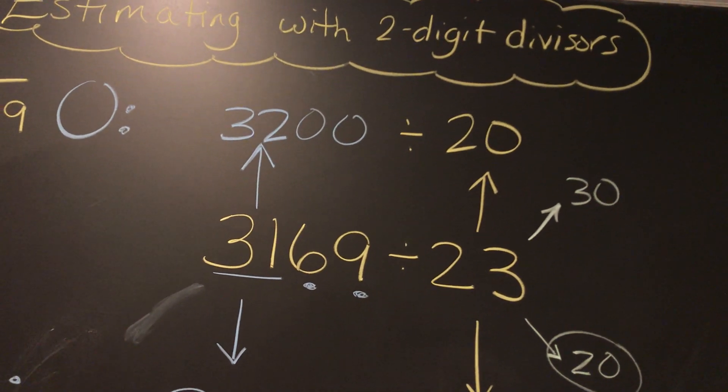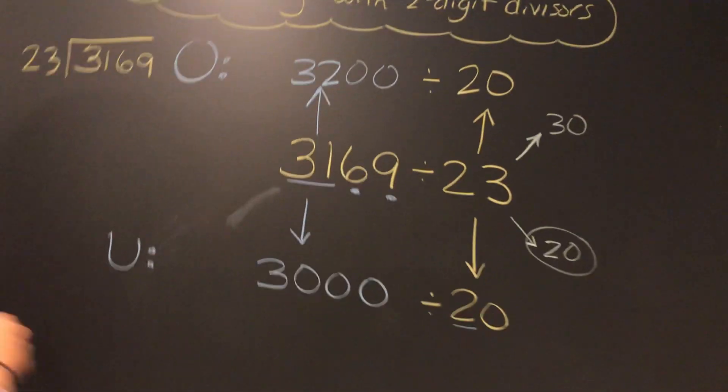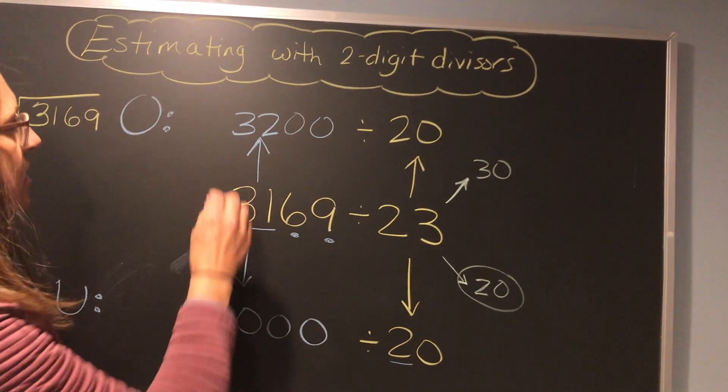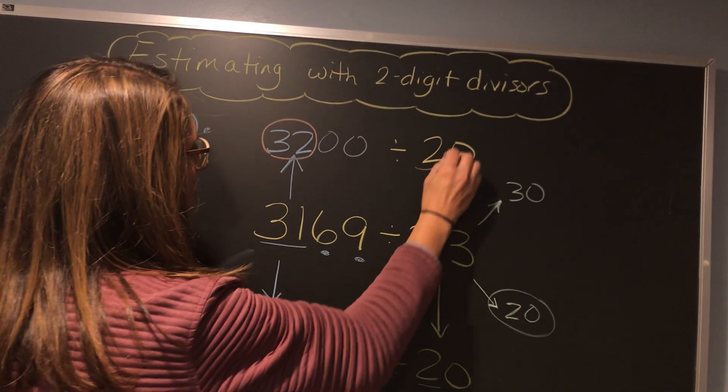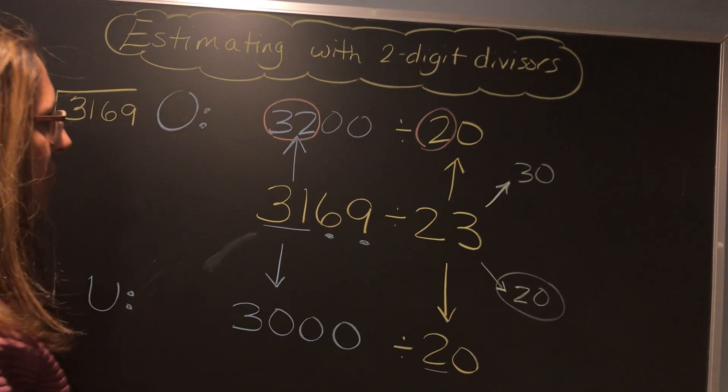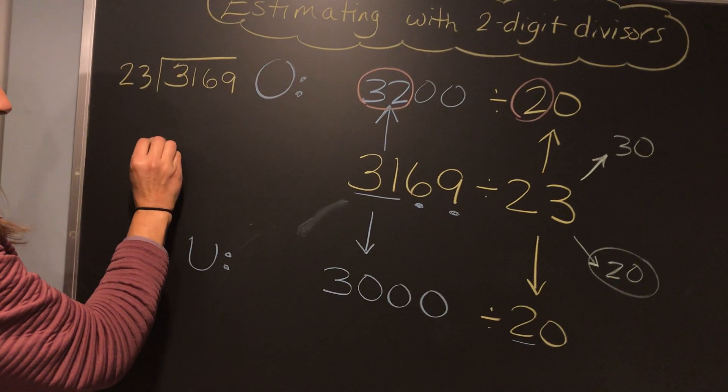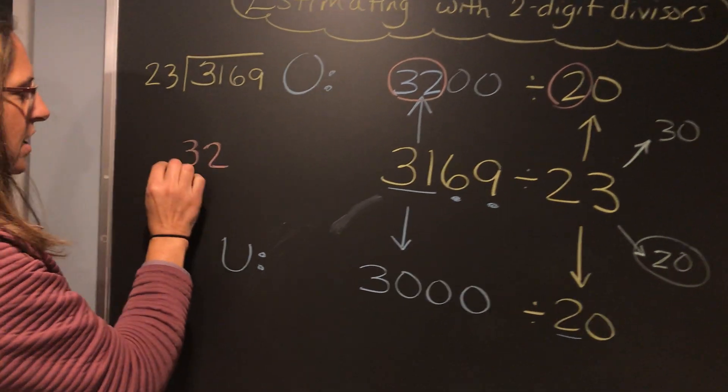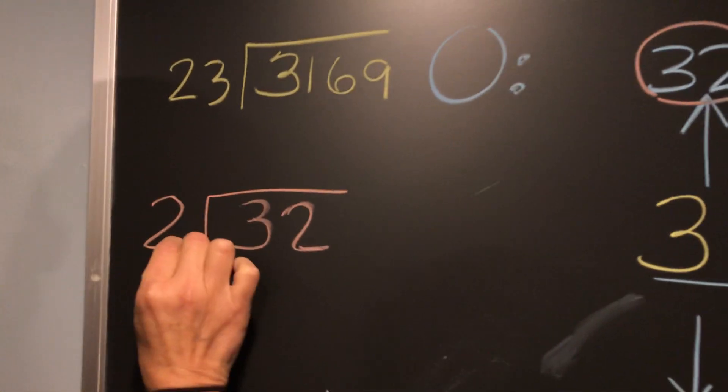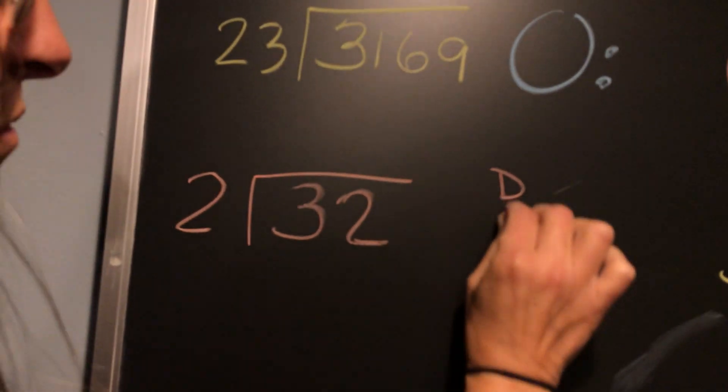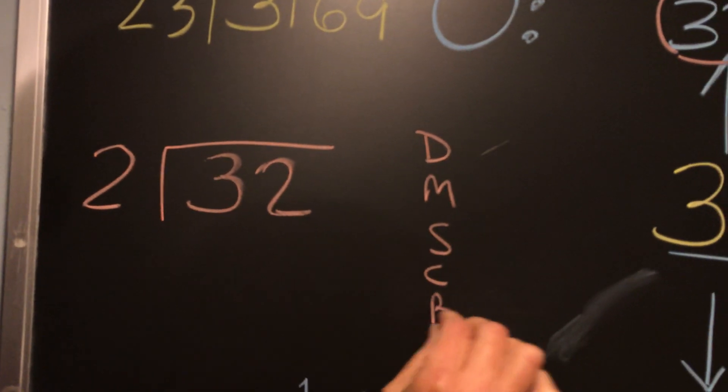Now we're just going to use basic patterns to solve that division. If you take 32 divided by 2, you can either do that in your head or we might do some long division to figure it out. I'm going to do that here. 32 divided by 2. We're going to divide, multiply, subtract, compare, and bring down.